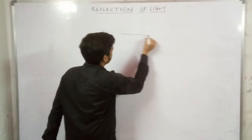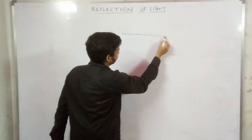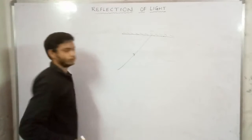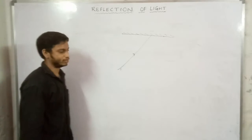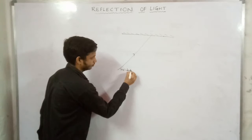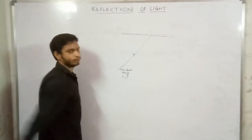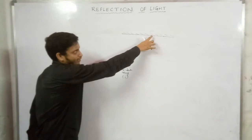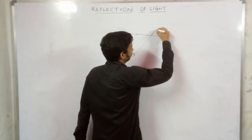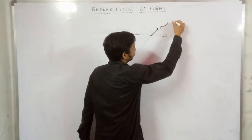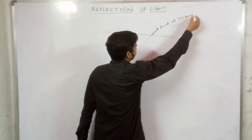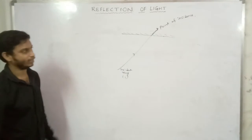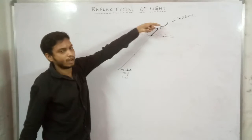Now, consider a plane surface. The light which falls on the surface is known as the incident ray. The point at which the incident ray touches the surface is known as the point of incidence.